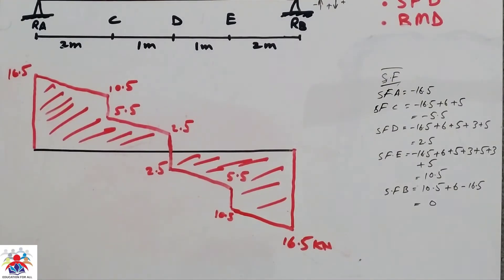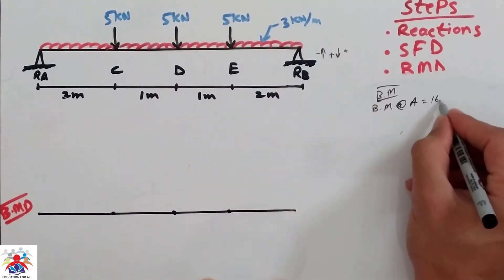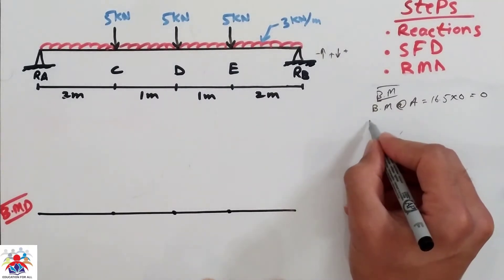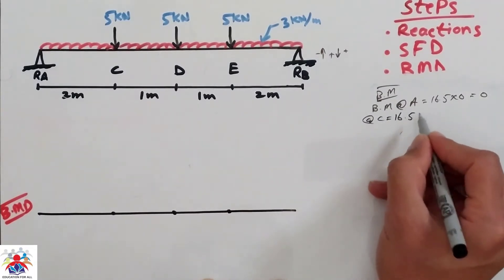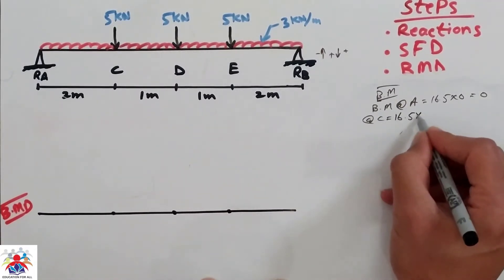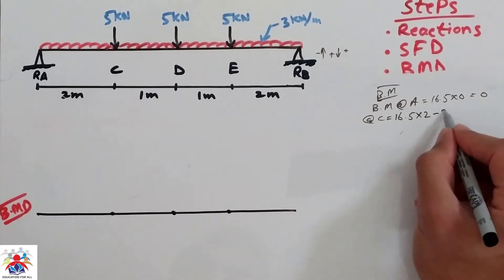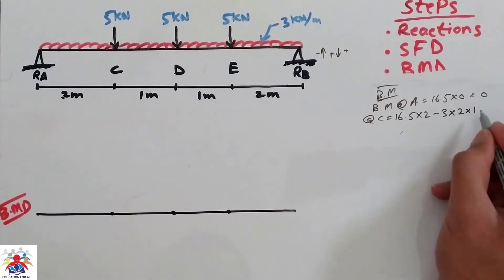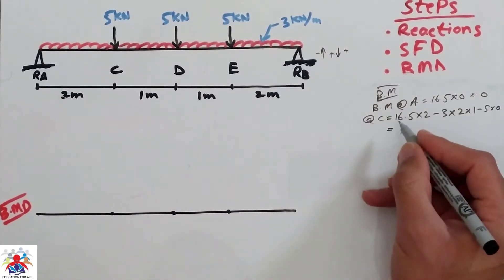Now we have to calculate the bending moment diagram. Bending moment at point A is 16.5 multiplied by 0, which equals 0. Bending moment at point C is 16.5 multiplied by 2, minus 3 multiplied by 2 multiplied by 1, minus 5 multiplied by 0.